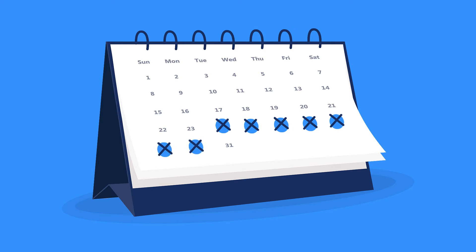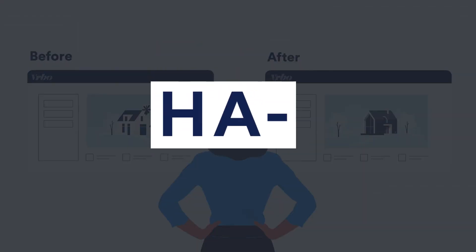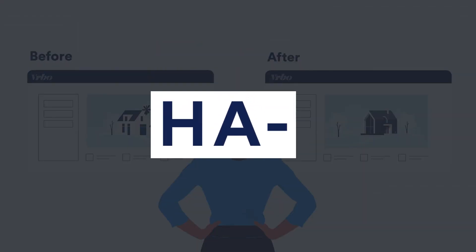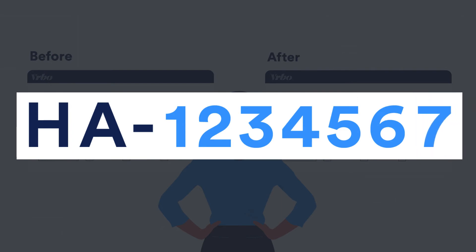It's easy to recognize which reservations were received before the connection to Guesti and which were received after by the number of digits in the reservation code. These codes start with HA and are followed by six digits if the reservation was received before the connection, and seven digits if the reservation was received after.